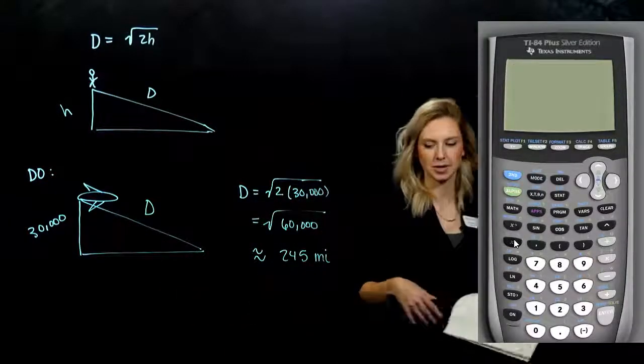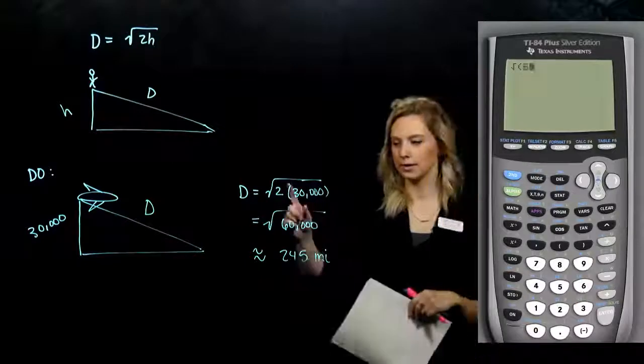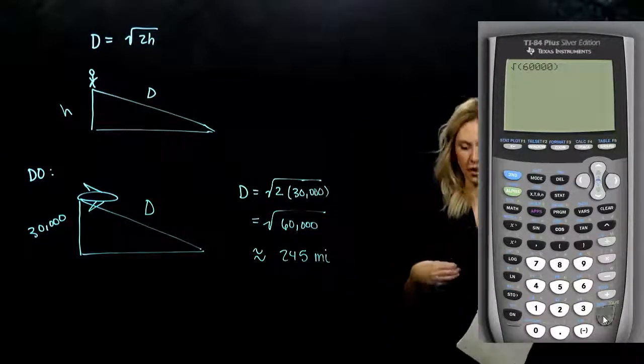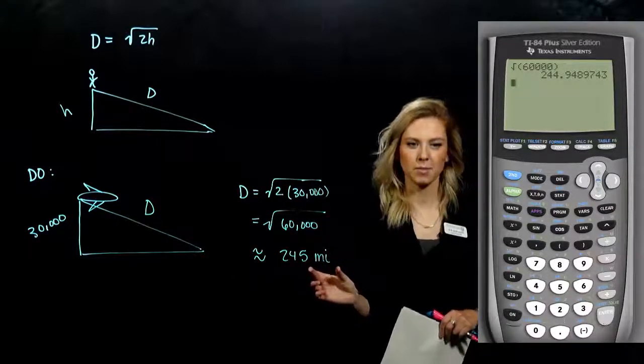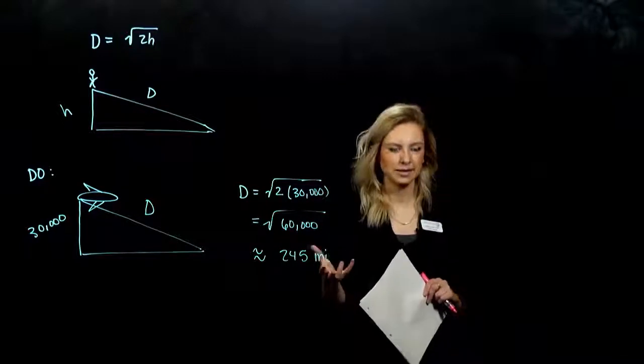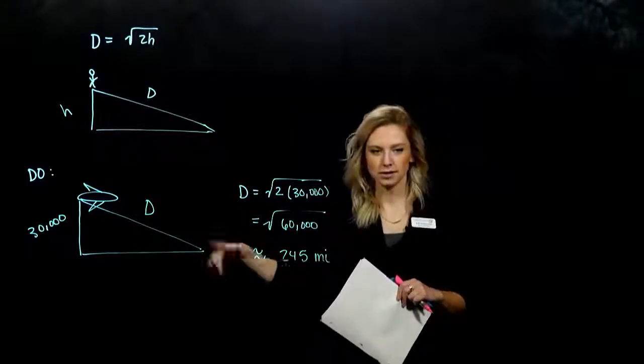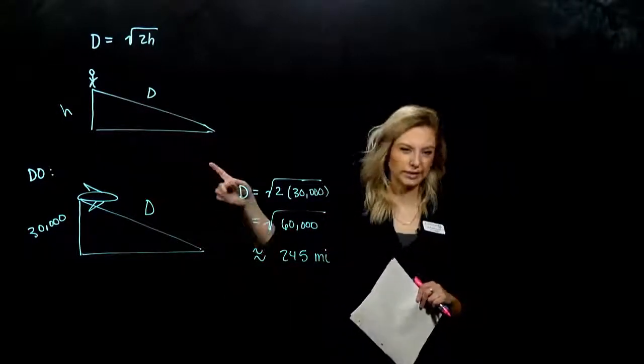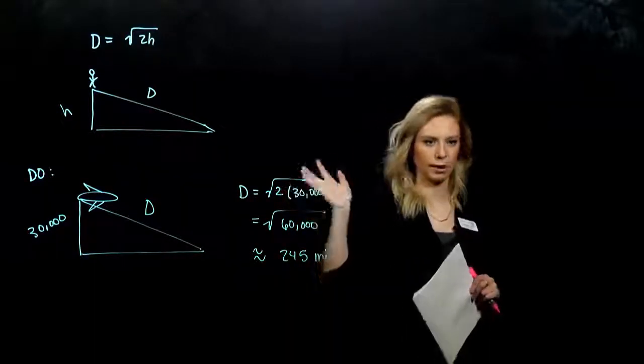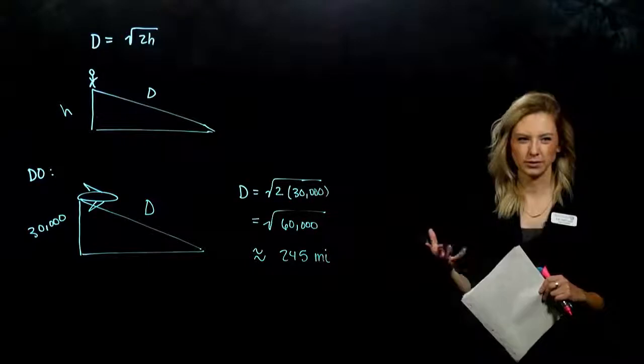And again, we can approximate that with a calculator. Going in, take the square root, 60,000, hit enter. We can round. And we have units of miles just based off our equation, what was given to us. It wouldn't really make sense if I was 30,000 feet up in the air and could only see out the window 245 feet. But our units need to make sense.